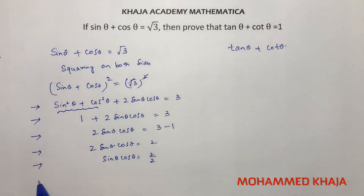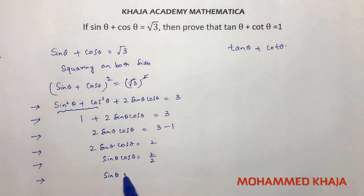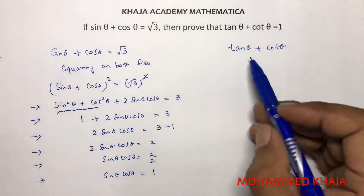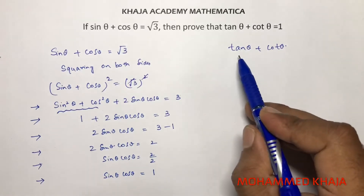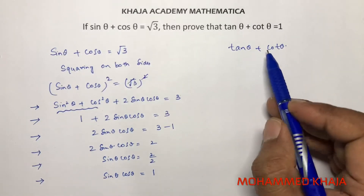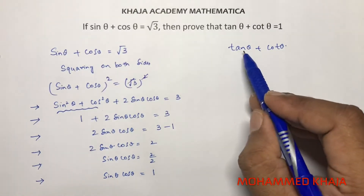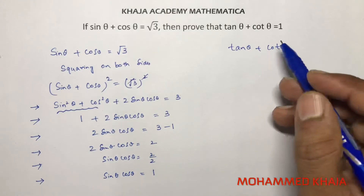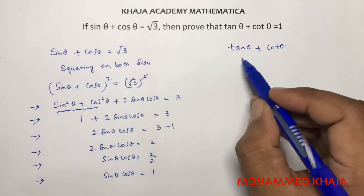So sine theta into cos theta equals 2 by 2, which gives sine theta into cos theta equals 1. Now we need to find the value of tan theta plus cot theta, so we change tan and cot in terms of sine and cos.